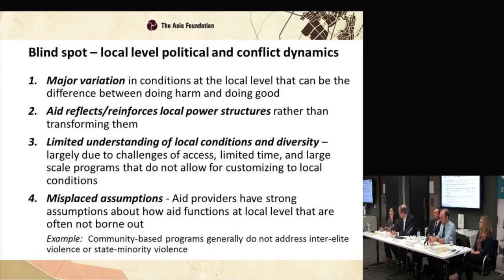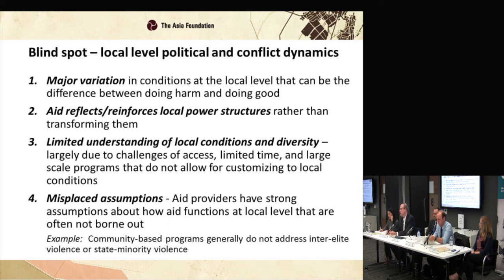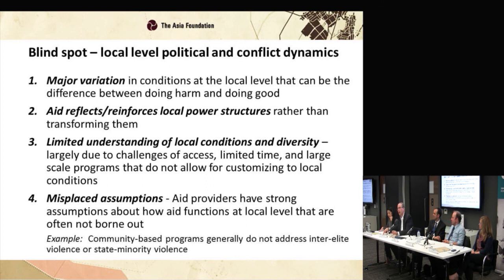A key blind spot is at the local level. We focus on the vertical state-minority conflict, but at the village level we find very diverse and different types of dynamics — often local elites or local actors in conflict with each other — that are very poorly understood by people in the national capital, by donors, by development actors. Our study draws out enormous variation: one area may have one insurgent group where the insertion of an aid program leads to an increase in violence, while the next district over, with a different insurgent group or local political dynamic, the exact same aid program can lead to a reduction in violence.